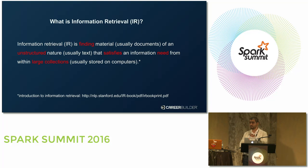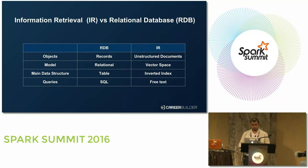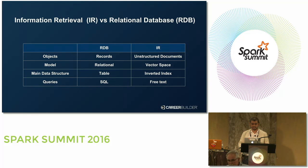The highlighted keywords give you the important pieces of this definition. 'Finding' means we are running search. 'Unstructured' — we are talking about unstructured data, not rows and columns. 'Satisfy needs' means there is a need submitted by a user and the information retrieval system should satisfy that need. 'Large collections' — we're not talking about 10 or 5 documents, we're talking about millions of documents. Now, if you want to compare information retrieval with relational databases, which most of us are familiar with, this gives you a brief comparison between both systems.